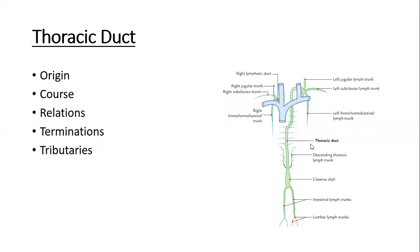The thoracic duct — the origin of the thoracic duct — is a sac-like lymphatic sac which is in the abdomen at the level of about the 12th thoracic vertebra, inferior to the diaphragm, within the upper part of the abdomen. This sac-like lymphatic tissue drains the lower part of the body, which comes from the lower limbs and the lower part of the abdomen.